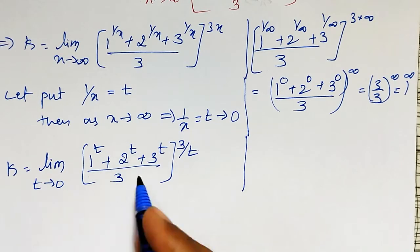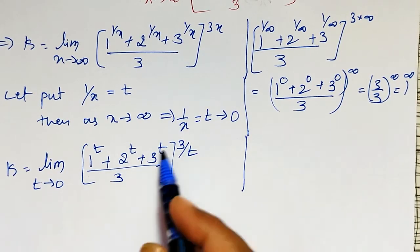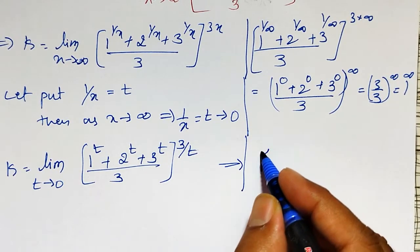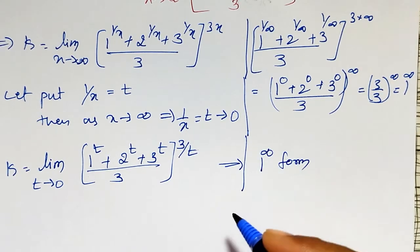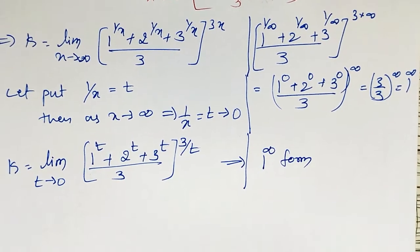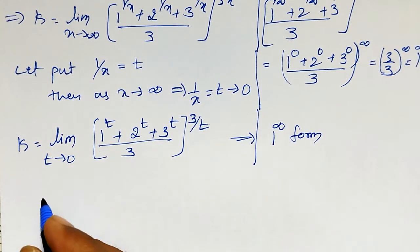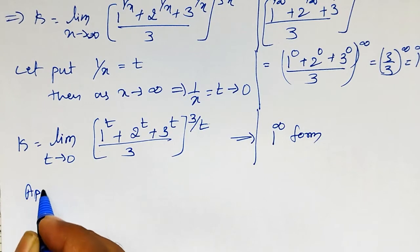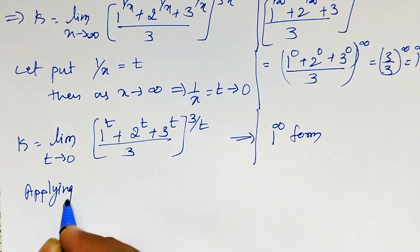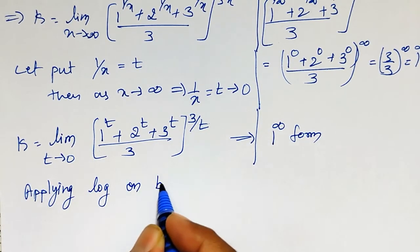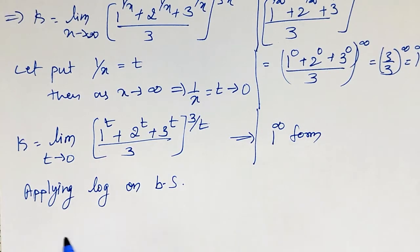As t tends to 0, this is again in the form of 1^∞. Since it is the 1^∞ form, I need to reduce it into 0/0 form. To do that, let me apply log on both sides.